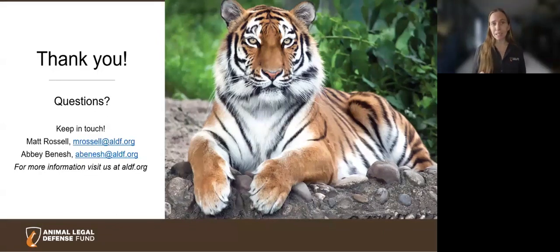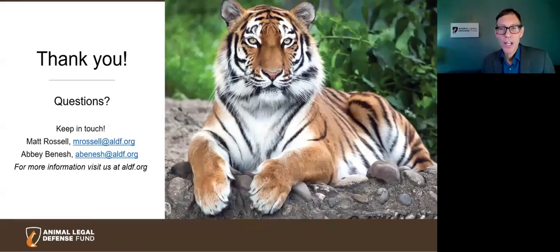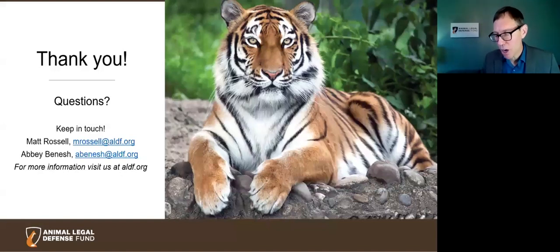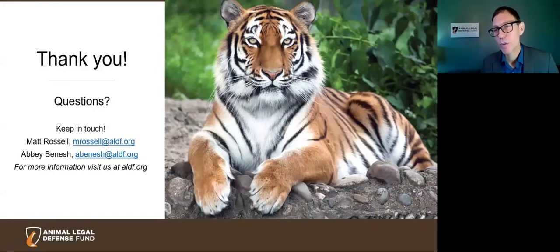On the topic of AI and ChatGPT — for those intimidated by it — Matt confirms you can simply edit the form email directly: change the wording around, shorten it, put it in your own words. If you only have time to do one thing, change the subject line. If a staffer is scanning through and every subject line is identical, they already know it's a form email. Just changing the subject line alone could make a huge impact.